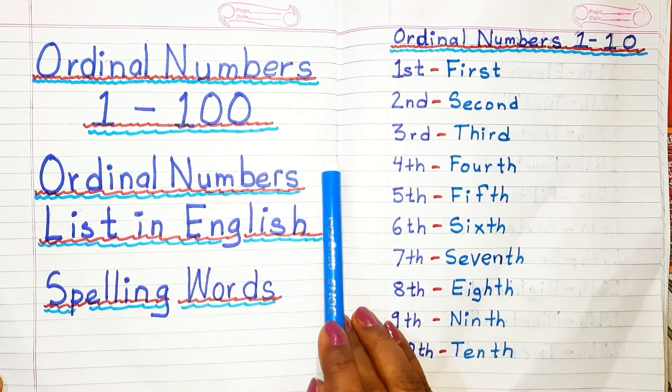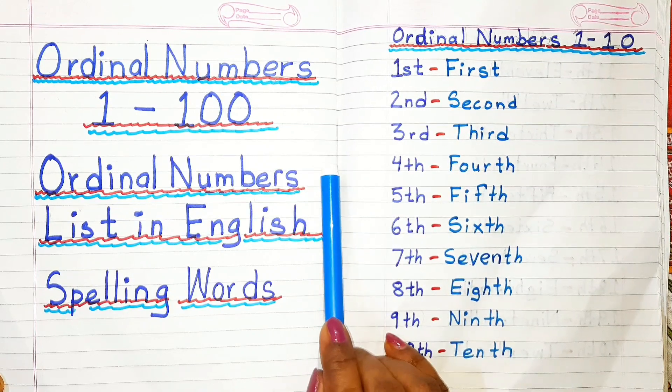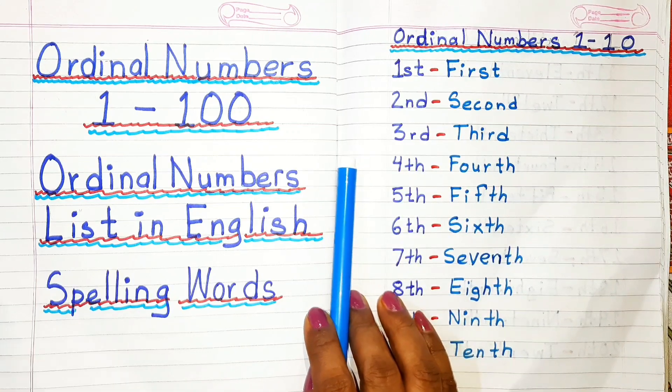Ordinal Numbers One-hundred-one to two-hundred video link is given in the description. You can watch from there. If you like this video, please subscribe to this channel, and also like, share and comment on this video.